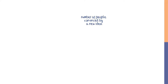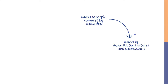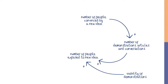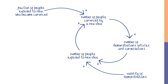As more people are convinced by a new idea, more and more people start acting on it. The number of demonstrations, articles, and conversations about the new idea increases. More people are exposed to the idea, and some of them are convinced, increasing the number of people convinced by the new idea. This is a classic reinforcing feedback loop, where change in one direction feeds back to create more change in the same direction.